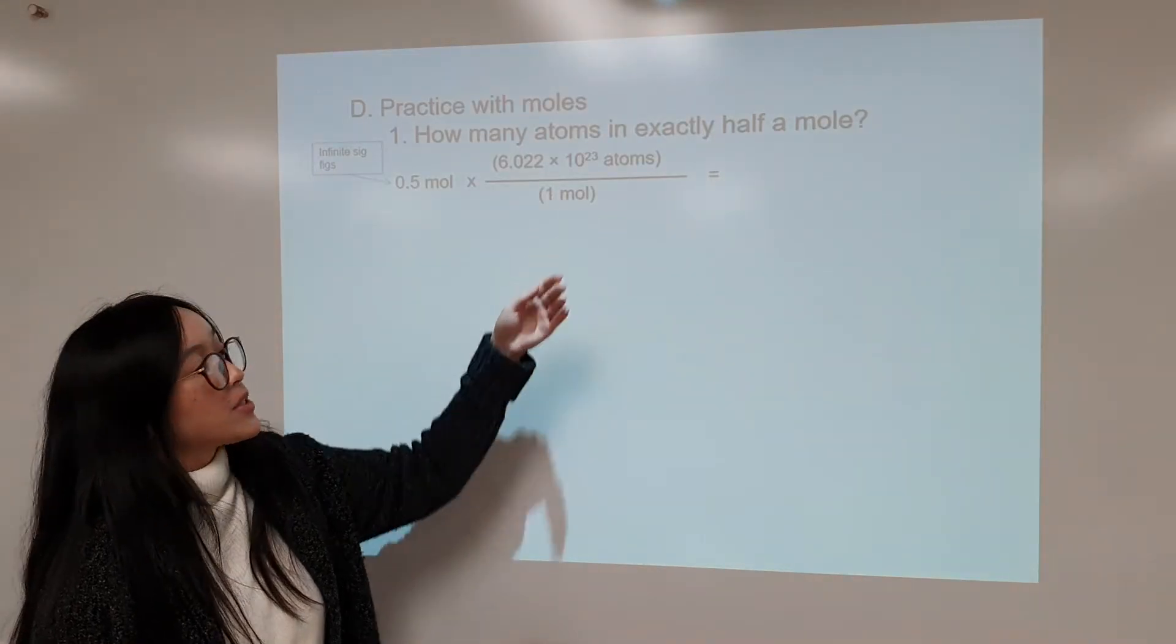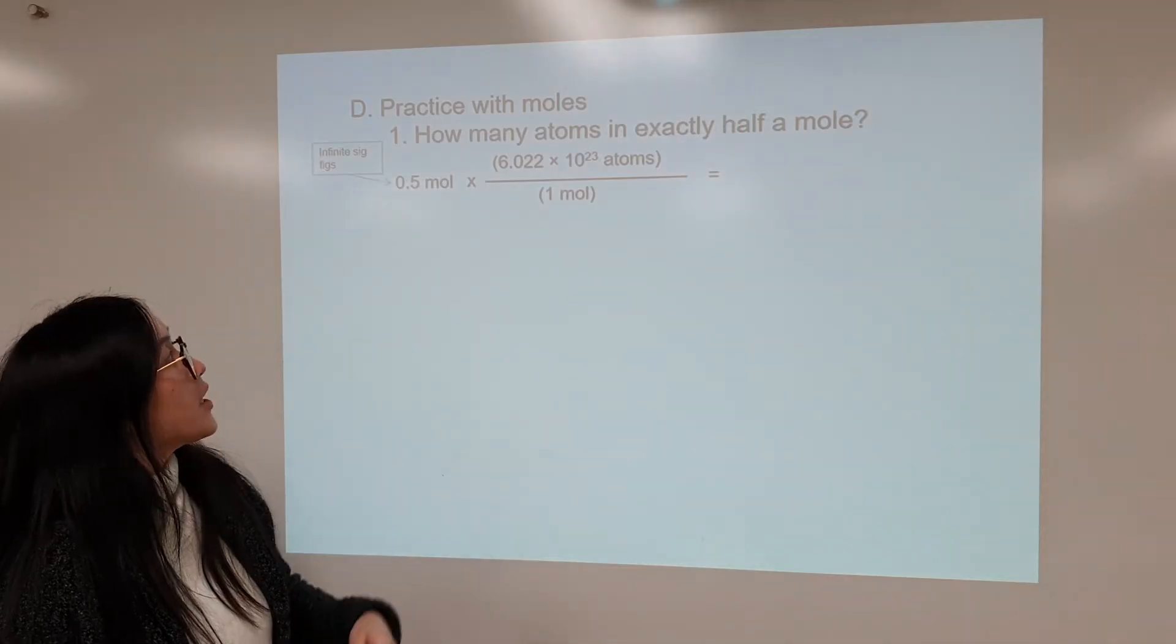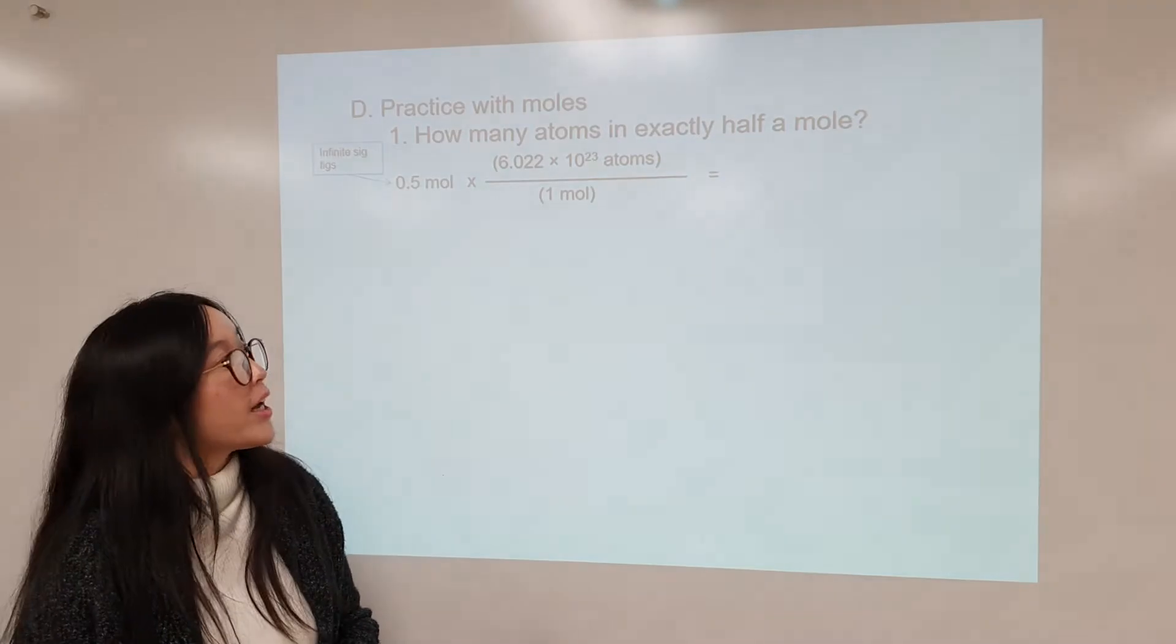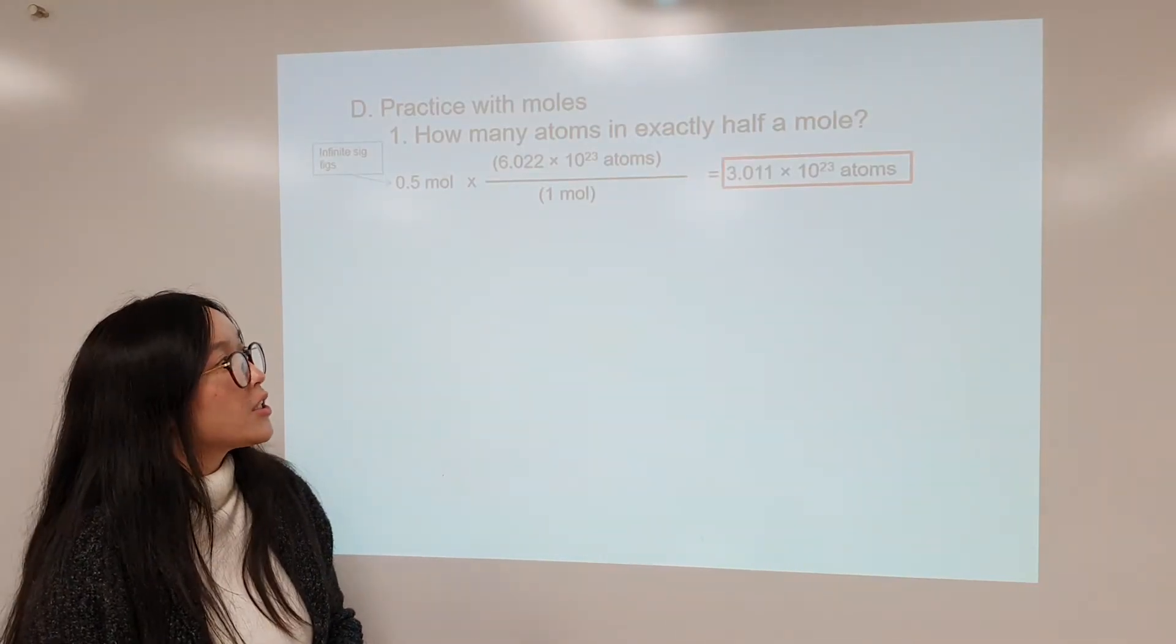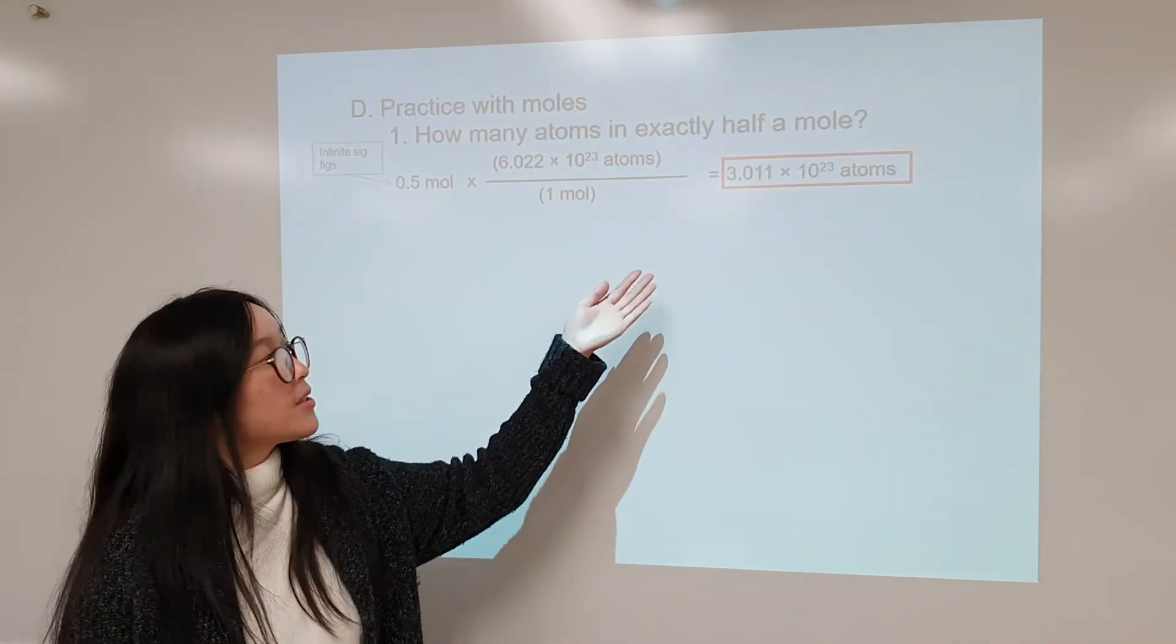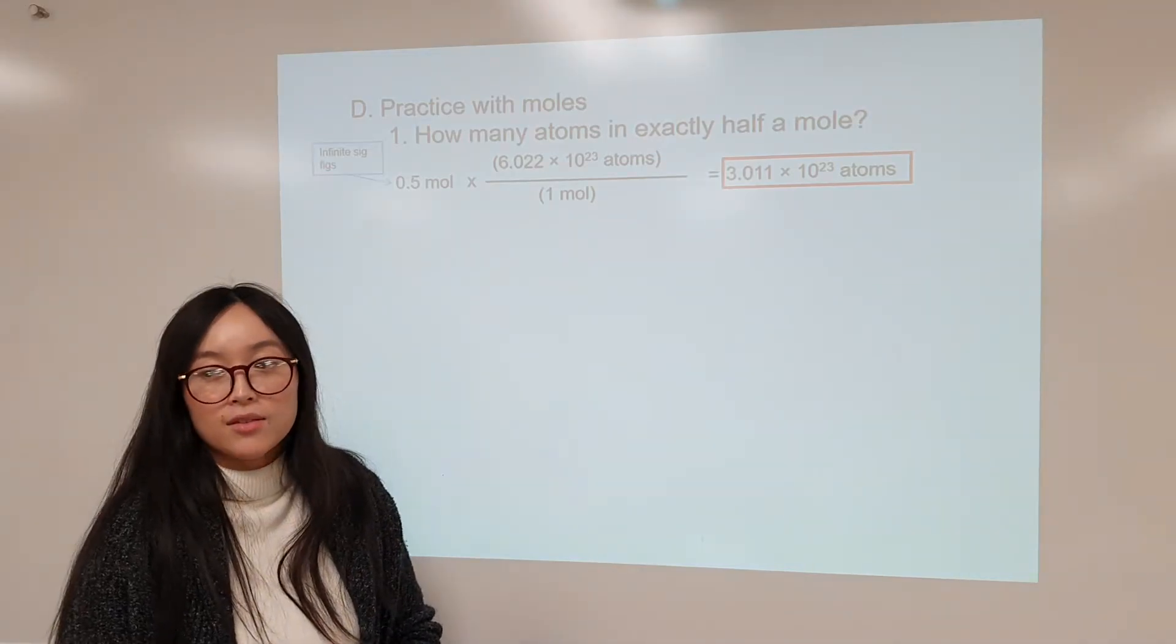So we'll put 0.5 moles times 6.022 times 10 to the 23rd atoms over 1 mole. And you'll be able to get your answer as 3.011 times 10 to the 23rd atoms. And of course, we want to make sure it has the correct sig figs. And also, it's boxed at the end.